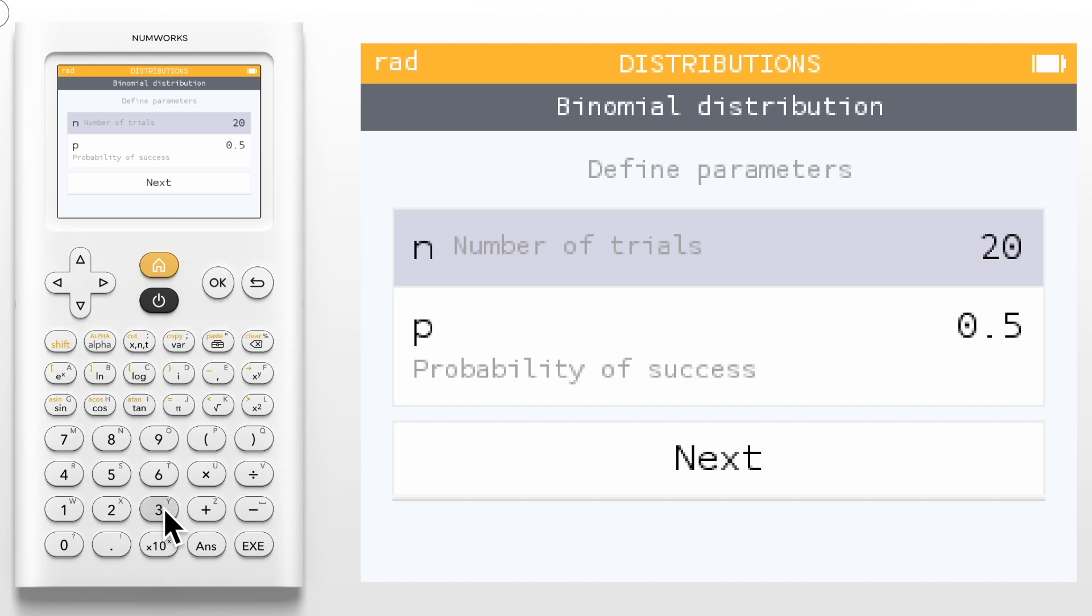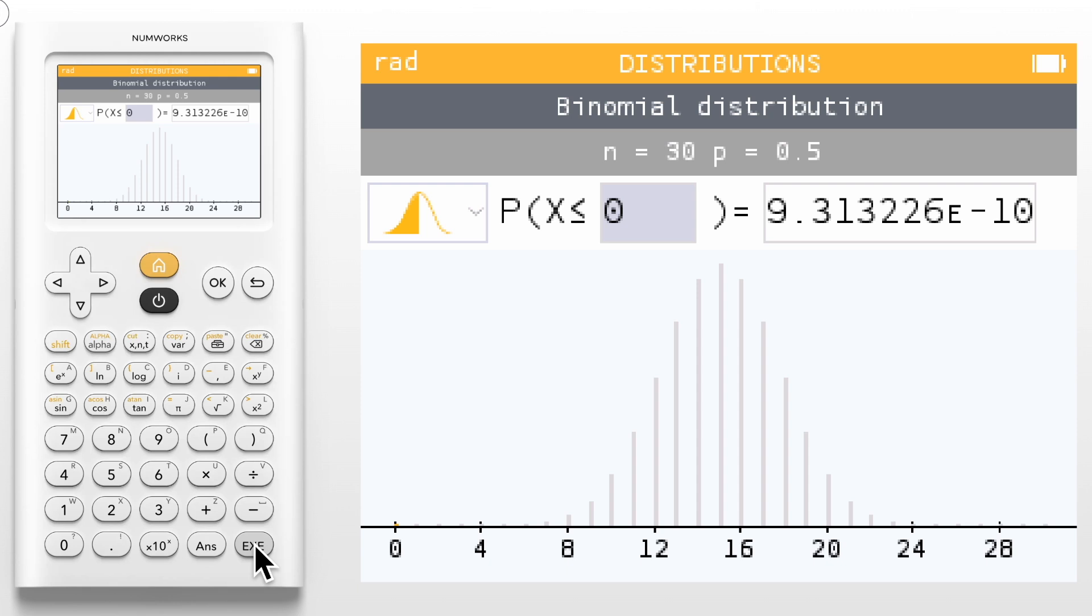number of trials and the probability of success. Let's assume we flip 30 coins where the probability of getting heads is 0.5. After selecting next we'll see a visual of our binomial distribution as well as a probability statement at the top. Let's determine the probability that no more than 12 coins are heads. That is the probability that X is less than or equal to 12. We already have the value of X highlighted so we can simply press 12 and enter. Doing so we get a probability of 0.1808. We also see the corresponding area shaded below.